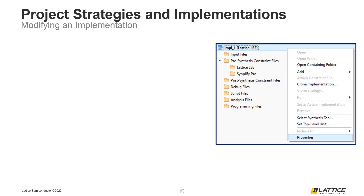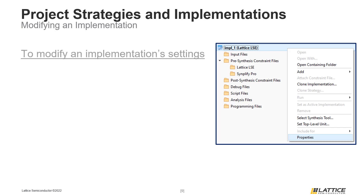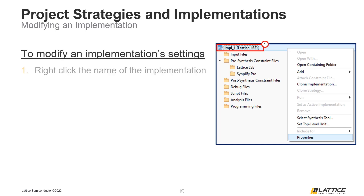The settings for an implementation can also be modified. To begin modifying the settings for an implementation, right-click the name of the implementation you want to edit. From the drop-down that appears, select Properties. This will open the project properties window.